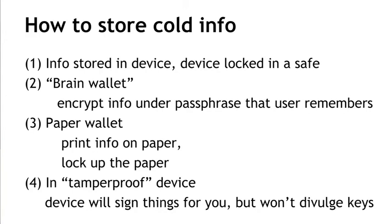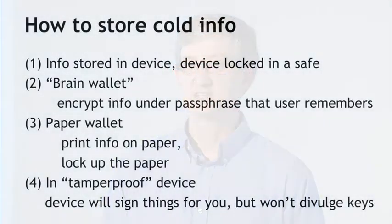The second method is called a brain wallet. In a brain wallet, we take the information we want to protect and encrypt it under some kind of passphrase or password that the user remembers. In order to get the information back later, we ask the user for the passphrase and then decrypt. If the crypto is done correctly and the user picked a good passphrase, then the security will be as good as the security of the passphrase. As long as the user isn't tricked or coerced into giving up the passphrase, and as long as the adversary can't guess it, then our data is going to be secure. But this is subject to the same kind of attacks that passwords typically are.